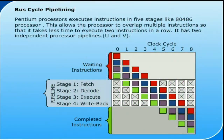The Pentium processor executes instructions in five stages, like the 80486 processor. This allows the processor to overlap multiple instructions so that it takes less time to execute two instructions in a row. It has two independent processor pipelines: U and V.